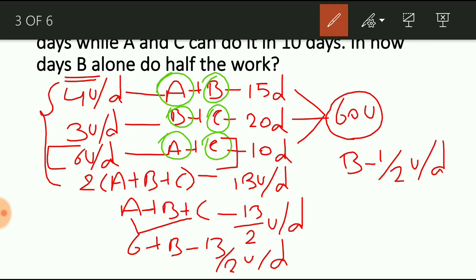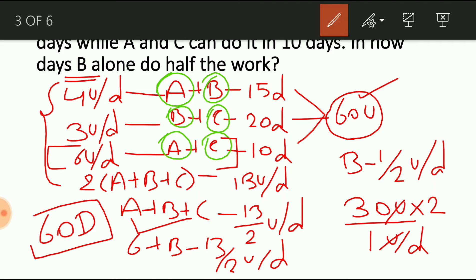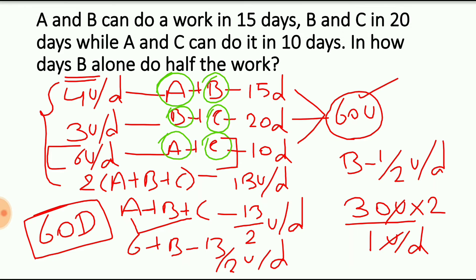In how many days will half the work be completed by B? Half of 60 is 30, so 30 units is the half-work which needs to be completed by B with efficiency 1 by 2 units per day. So 30 divided by (1 by 2) gives 30 into 2, which equals 60. So in 60 days, B alone will complete half of the work.